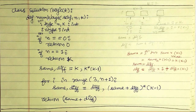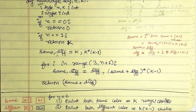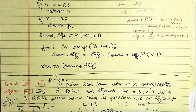Now we code it up. We define a function numWays(n, k). If n equals zero, we return zero. If n equals one, we return k. We then initialize same = k and diff = k*(k-1) corresponding to the two-pillar base case.